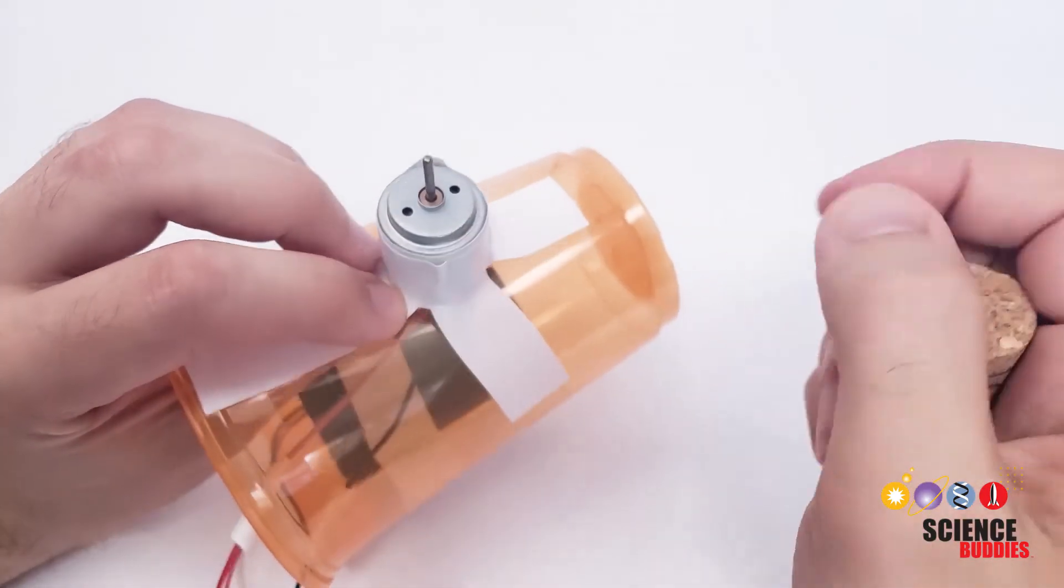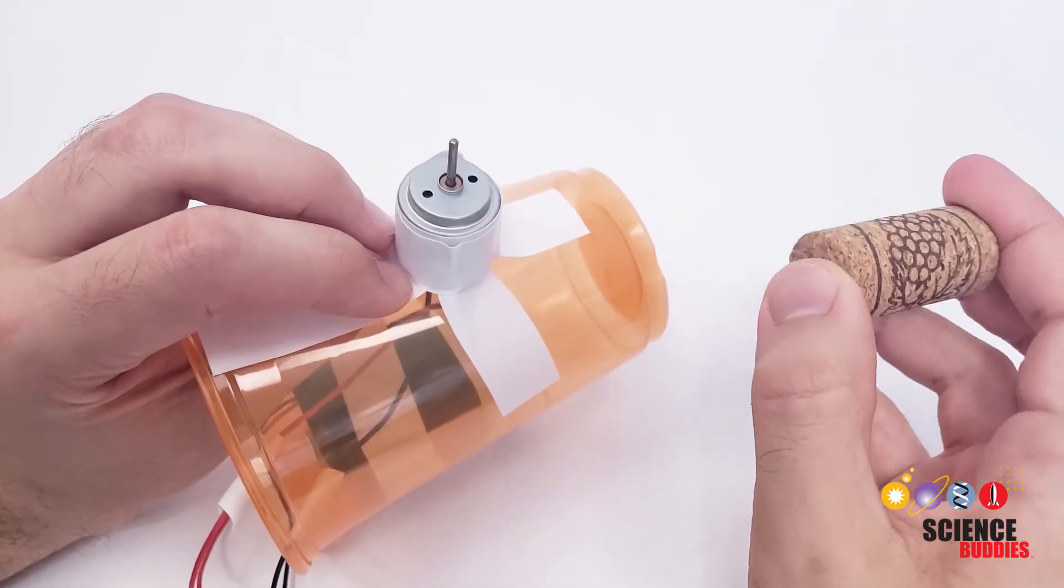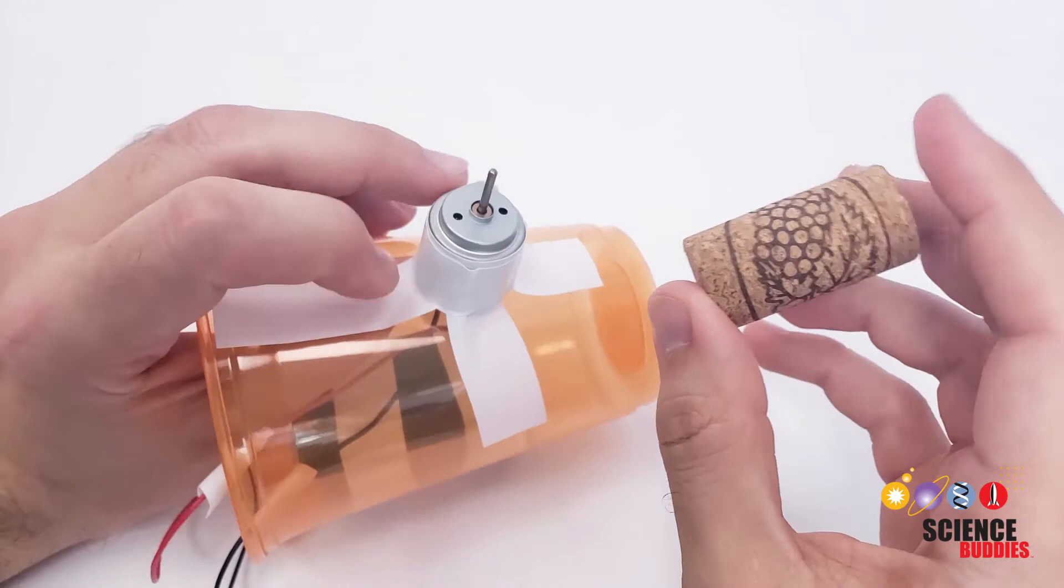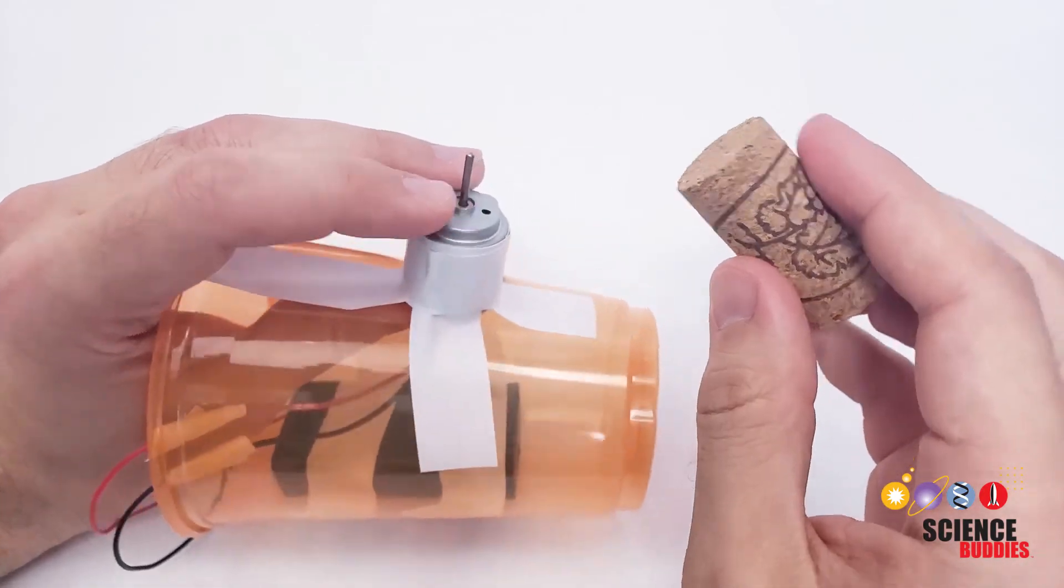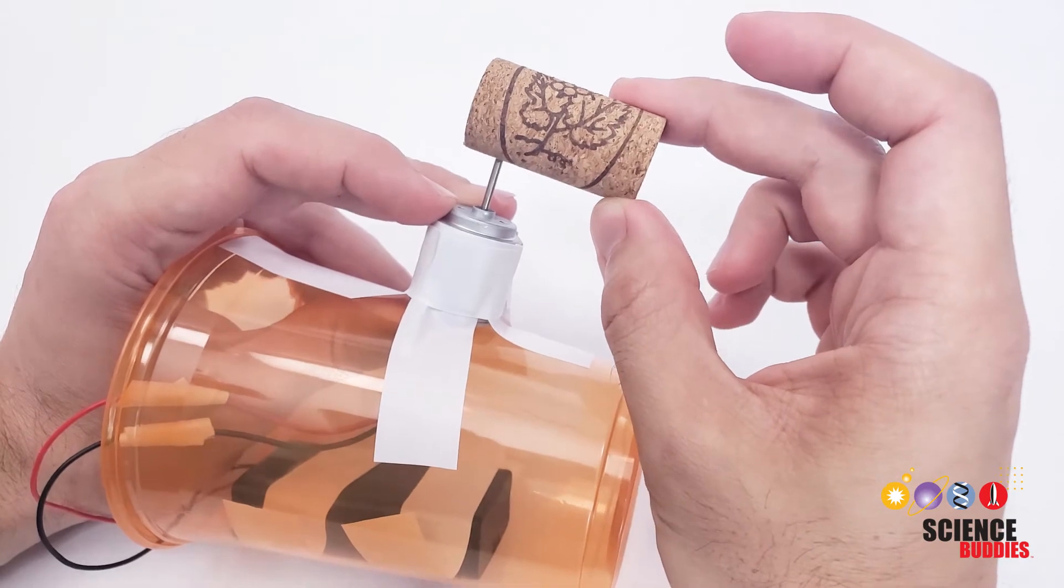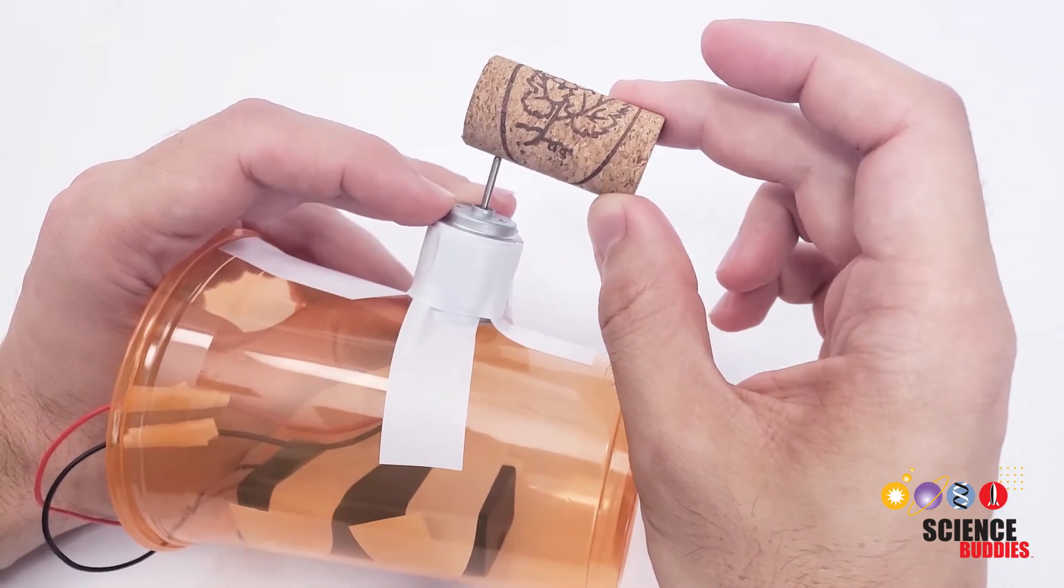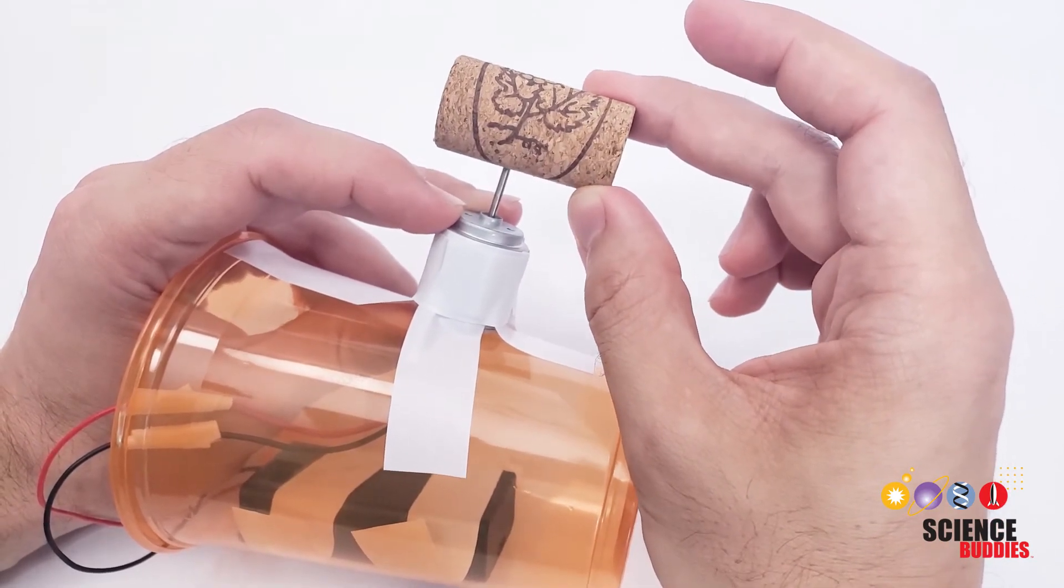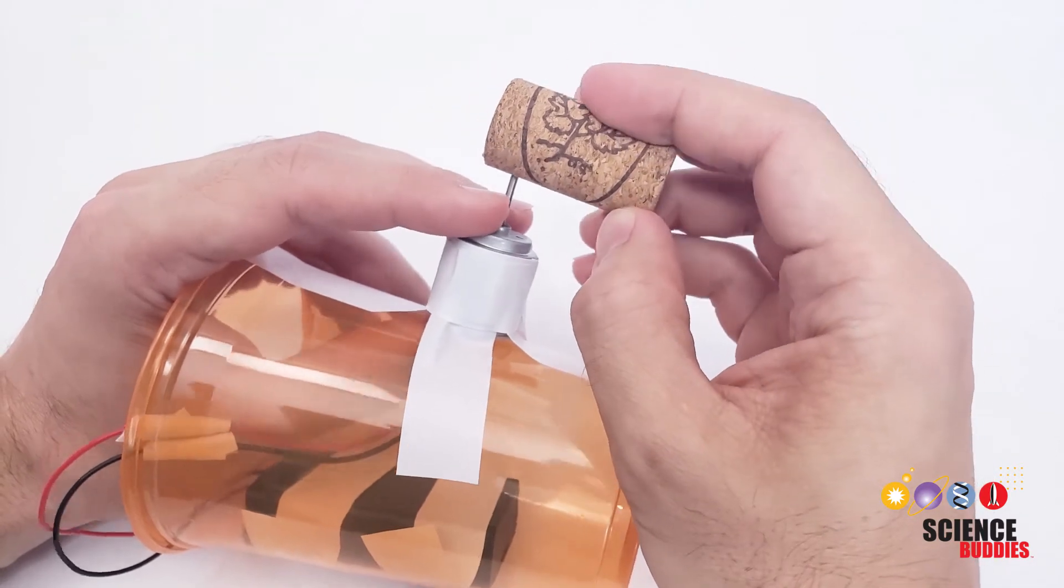Now that motor shaft spinning on its own is not enough to make your robot vibrate and wobble around. That is where the cork comes in. You are going to take your cork and press it all the way onto the motor shaft but make sure it's off-center. That off-center vibration is what's going to make your robot wobble. So you don't want to put the cork centered on the motor shaft like this.